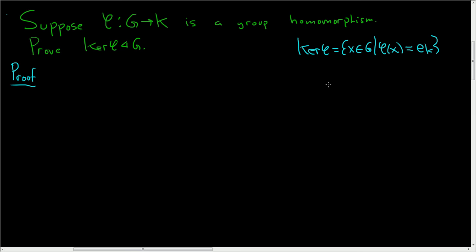So we have to prove that the kernel is normal in G. So we have to show that for all g in G and for all h in the kernel of phi, that the element ghg inverse is in the kernel of phi. That's what it means for the kernel of phi to be normal in G.